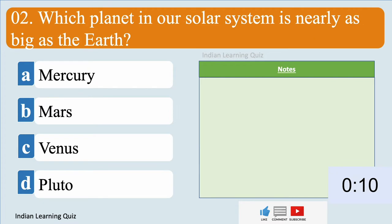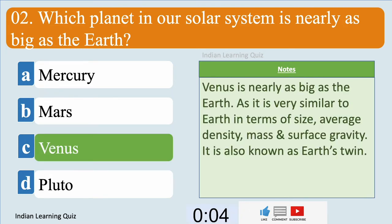Which planet in our solar system is nearly as big as the Earth? Venus.